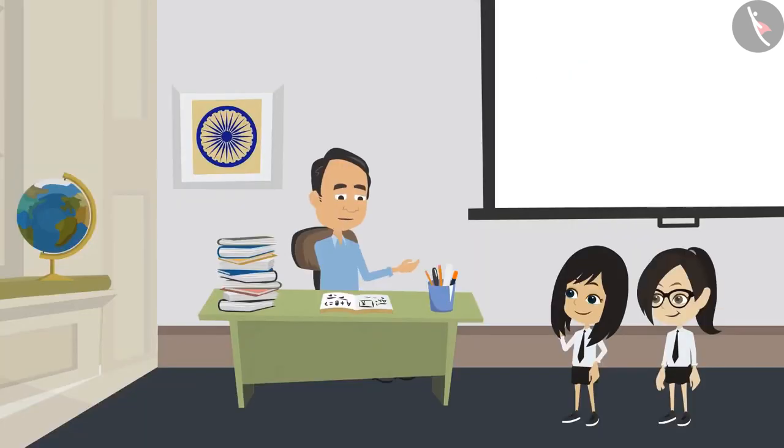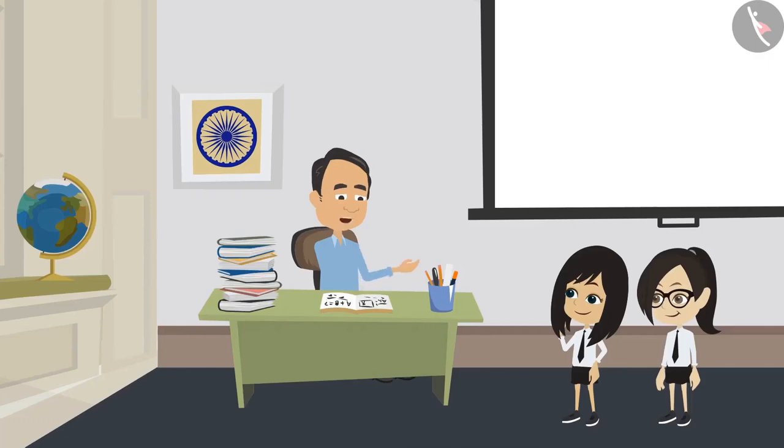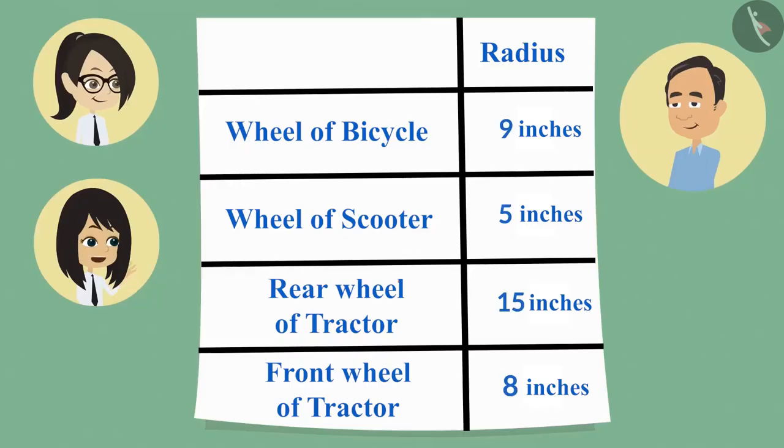So to measure the wheels, which properties of the circle did you measure? Sir, we measured the radius of all the wheels. Then let us see whatever you have measured. Here you are, sir.